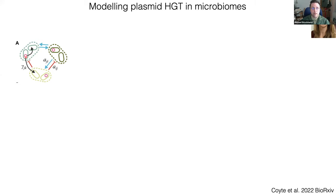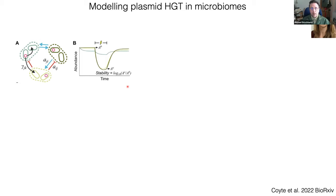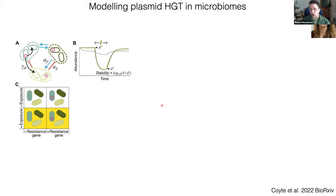The resistance gene could spread within a species or between species, effectively modeling a plasmid in a complex microbiome. We used this model to examine how plasmids affect the stability of complex microbiome communities. Stability is measured as log(abundance after antimicrobial exposure / abundance before exposure). We test this with or without the resistance gene, and with or without mild prior exposure to the antimicrobial stressor before a high-level perturbation.